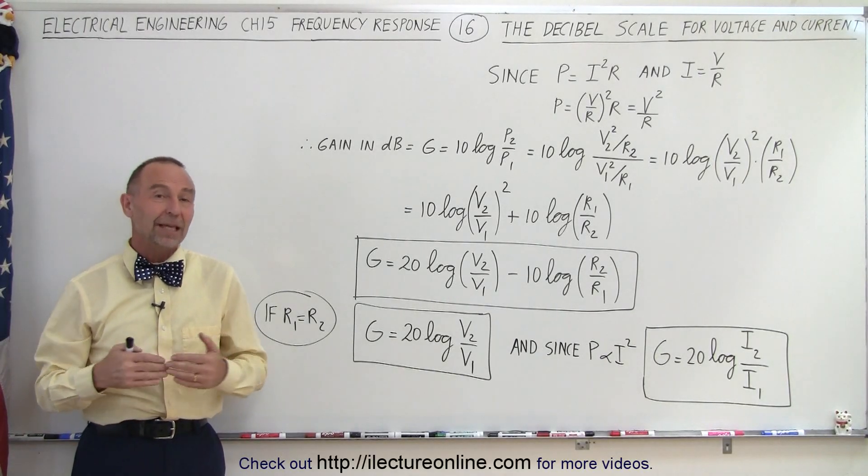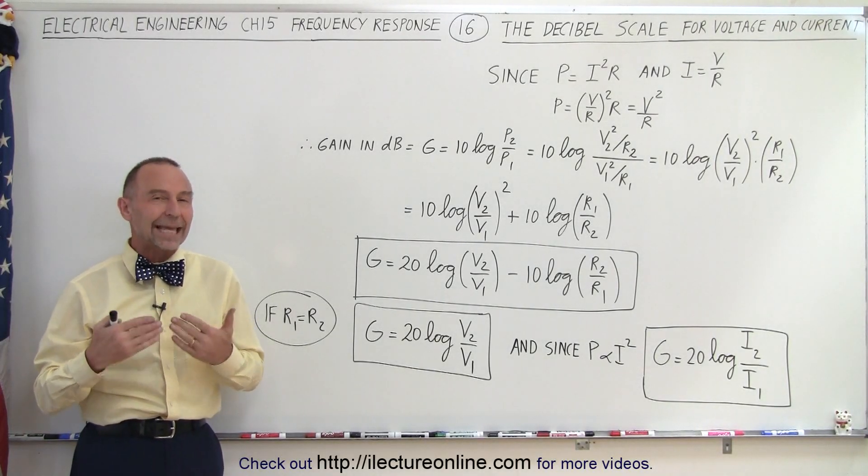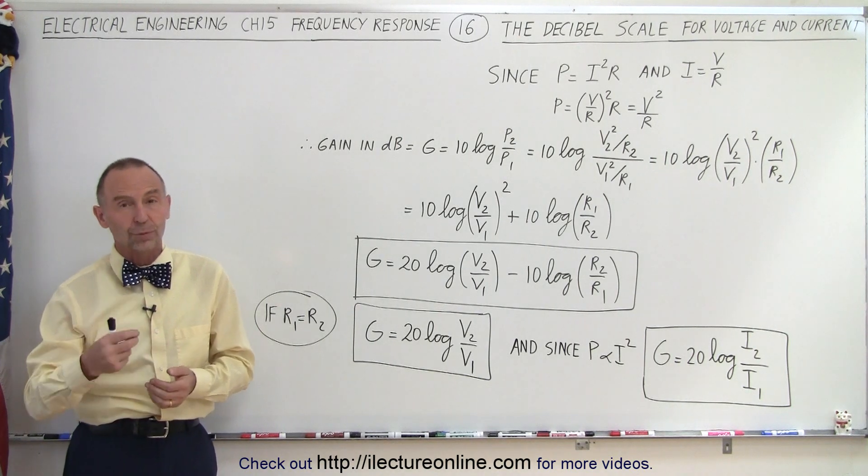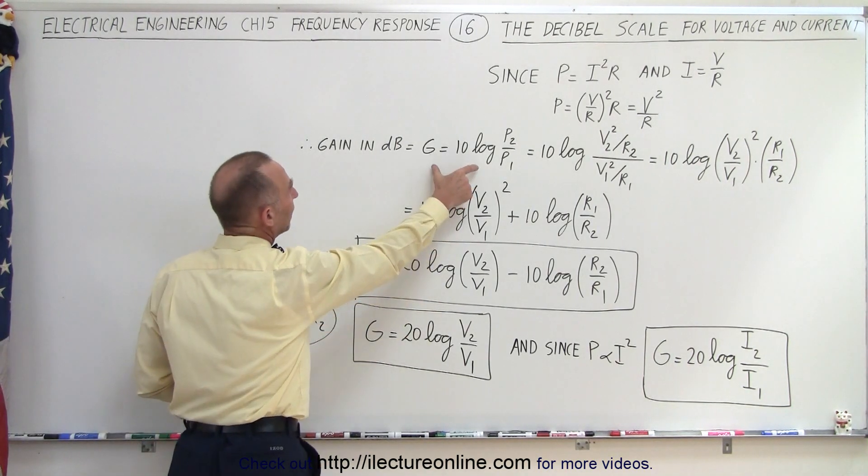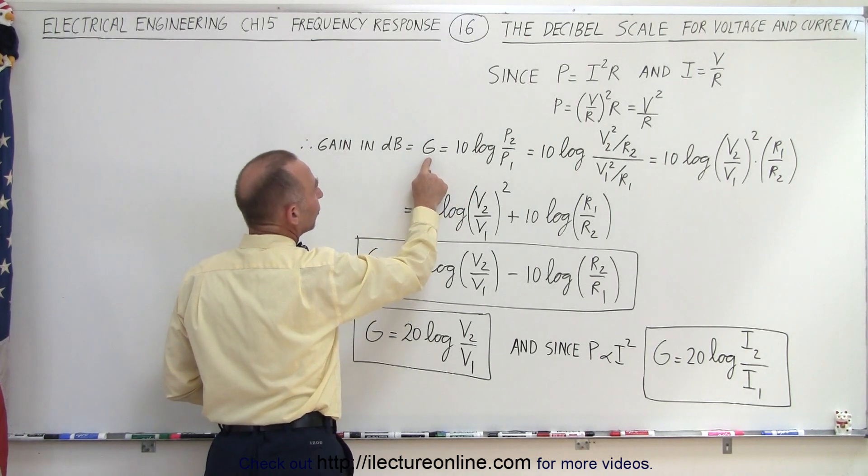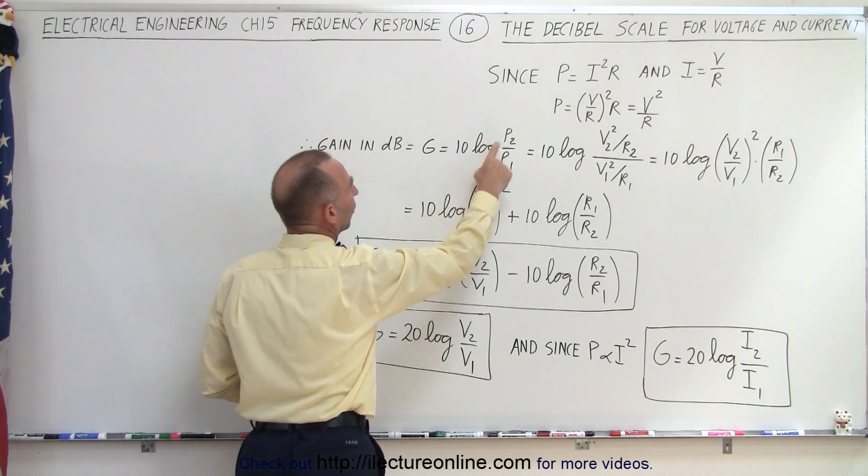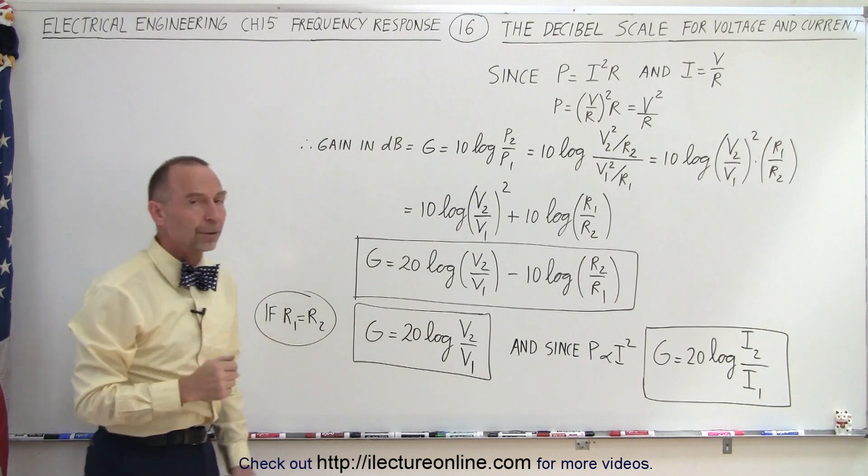Welcome to our lecture online. In the previous video we calculated the gain of a transfer function in terms of decibels or the decibel scale, and this is the equation that we got. The gain in decibels is equal to 10 times the log of the ratio of the power.